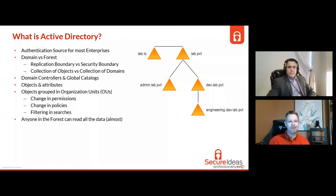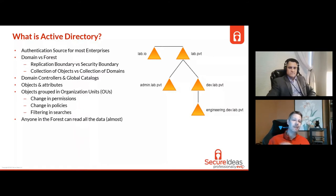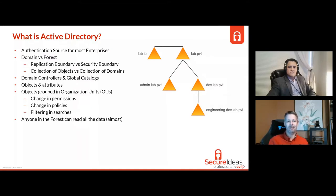Then we get to the meat of Active Directory: objects and attributes. Objects are the general overarching items — users, groups, computers, printers — they are an identity of some type. Attributes are the different pieces of information tied to each one of those objects in the directory. That information is going to be the same across all domains in the forest in terms of available fields, though what you actually enter into those attributes differs per object. Your selection of objects and attributes is the same across the forest.